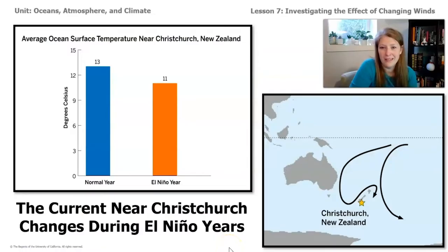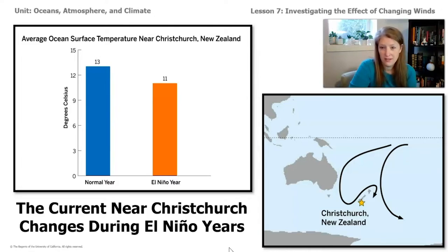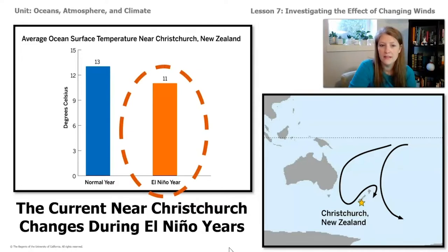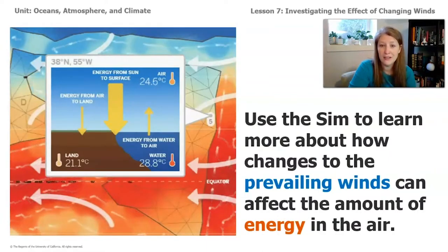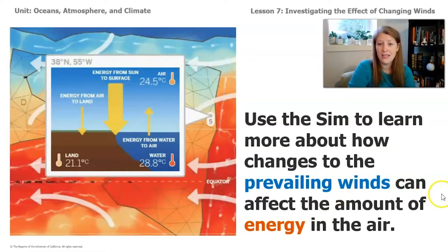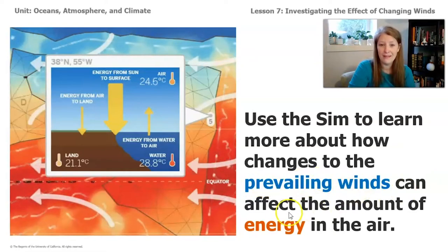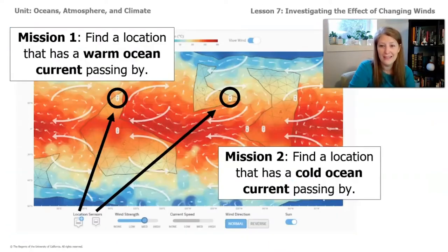Now that we've explained the air temperature of Christchurch during a normal year, let's figure out what can make the air temperature change during El Niño. We know the direction of currents is caused by prevailing winds, and the current near Christchurch changes during El Niño years — we can see the temperature is dropping and the water temperature is changing. For today's lesson, we're going to use the sim to learn more about how changes in prevailing winds can affect the amount of energy in the air.